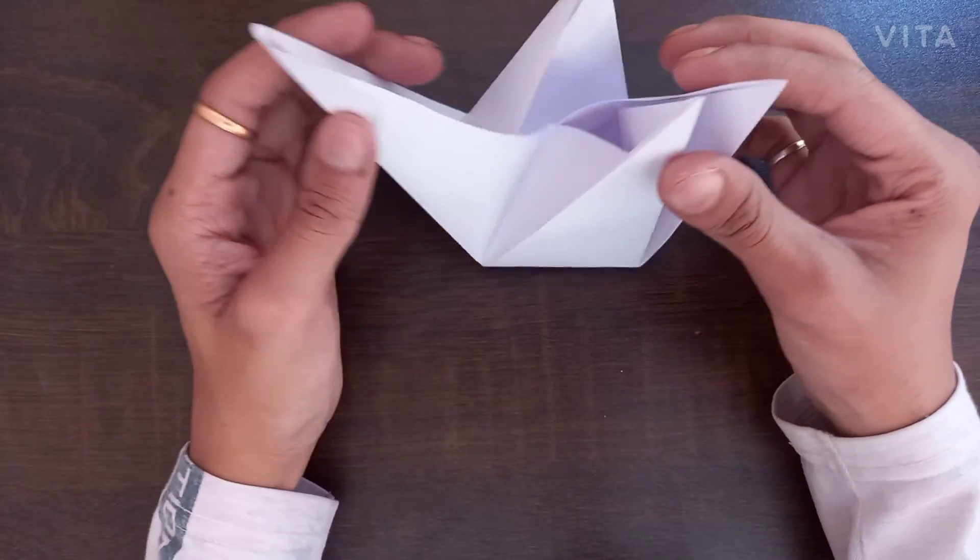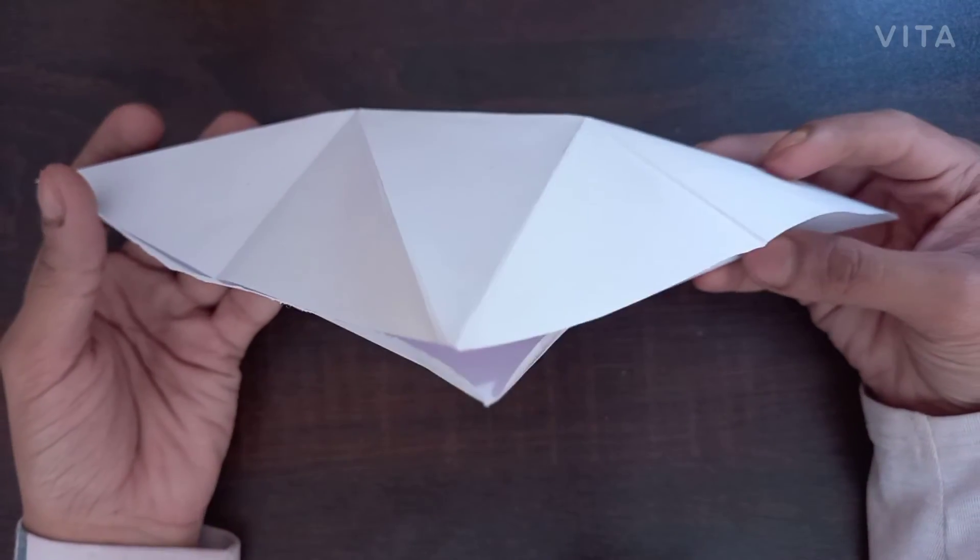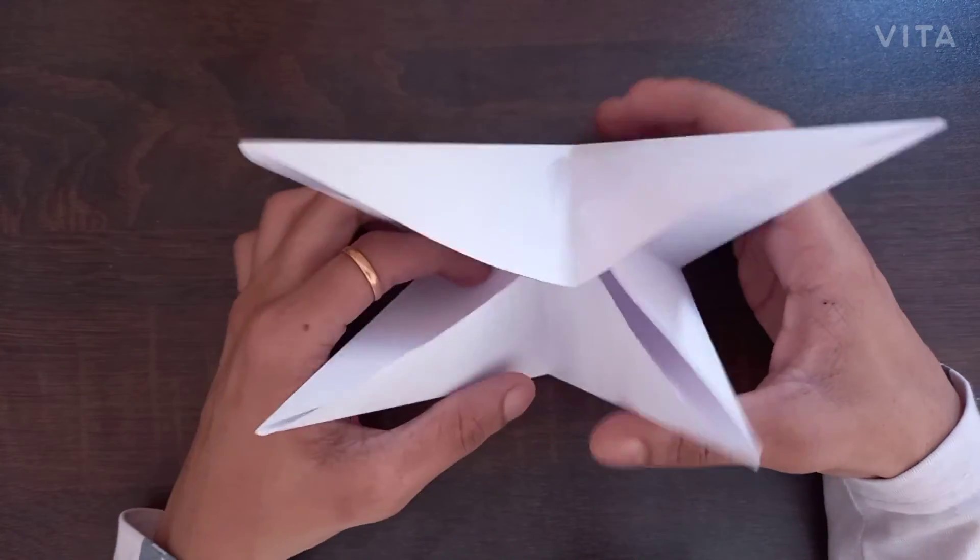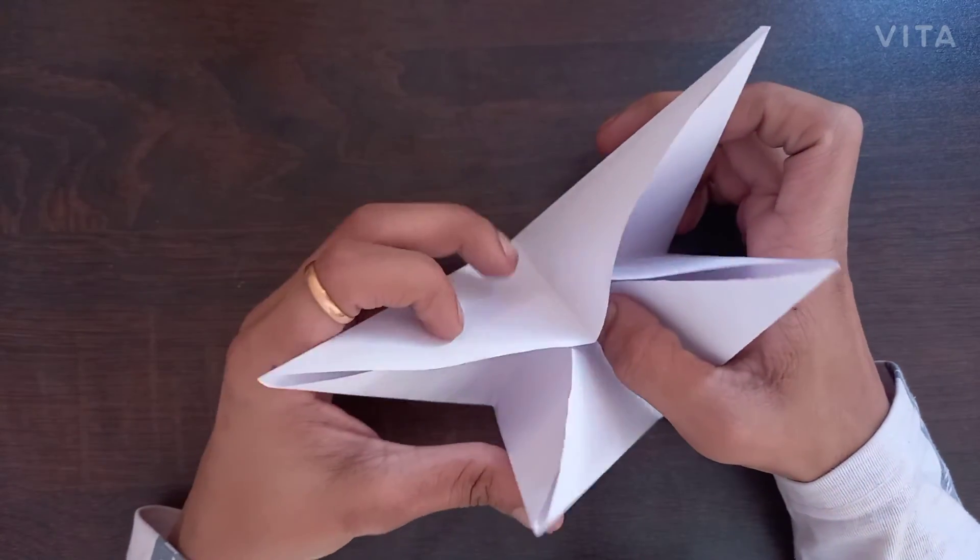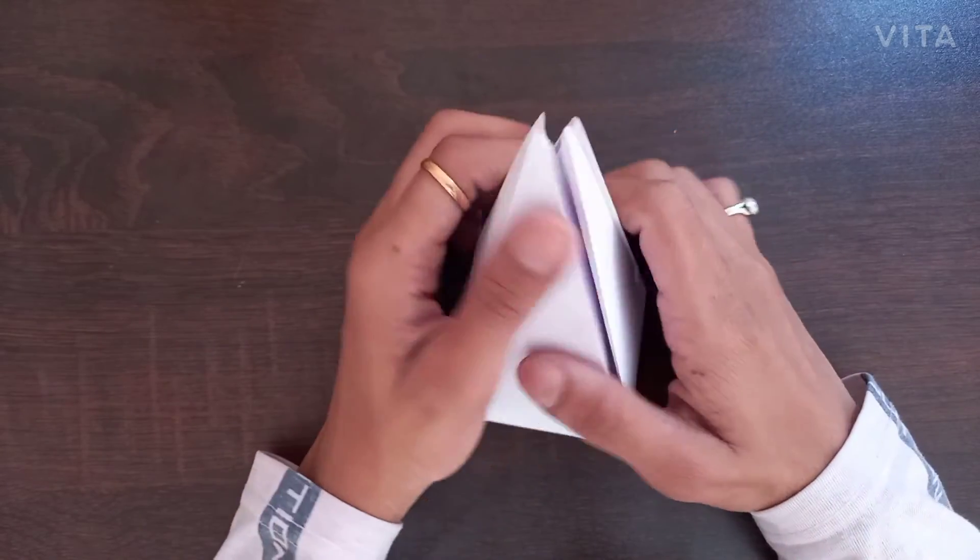And if you pull the opposite sides, then it can become a mouth also. So you have to do this first to make the model stay in its shape.